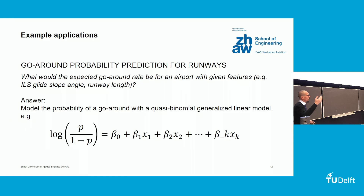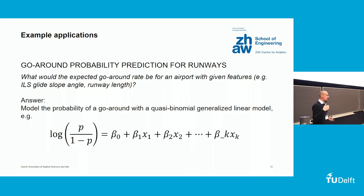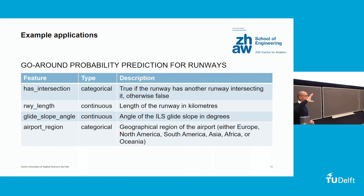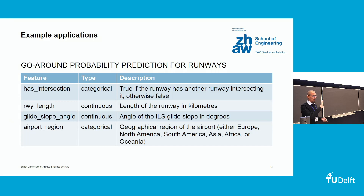Back to the original question: how can we estimate the go-around rate for an airport where we have too few or no observations, but we have a bunch of features? We came up with a generalized linear model that models the probability of the go-around, which is essentially the same as the go-around rate. The model is very simple with only four predictors: whether the runway has an intersection, runway length in kilometers, glide slope angle in degrees, and the region of the airport.